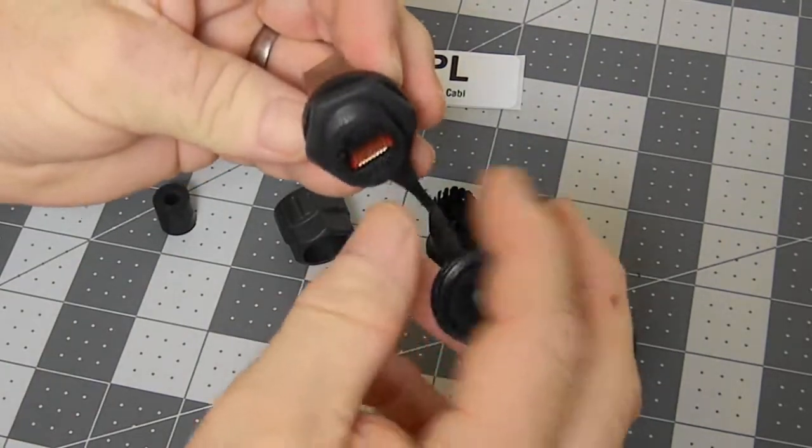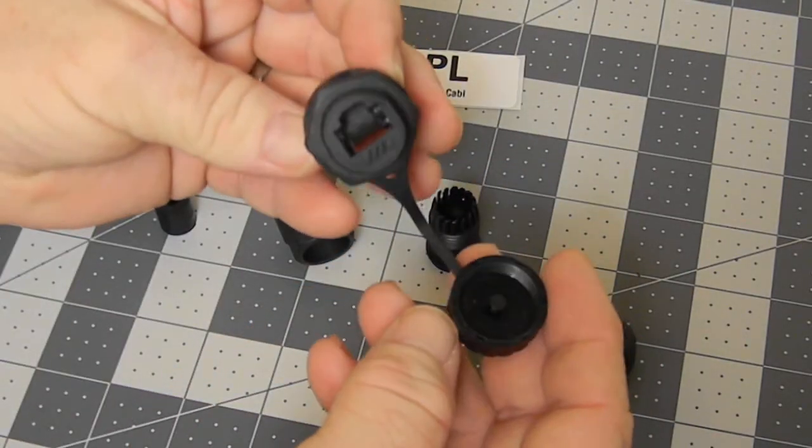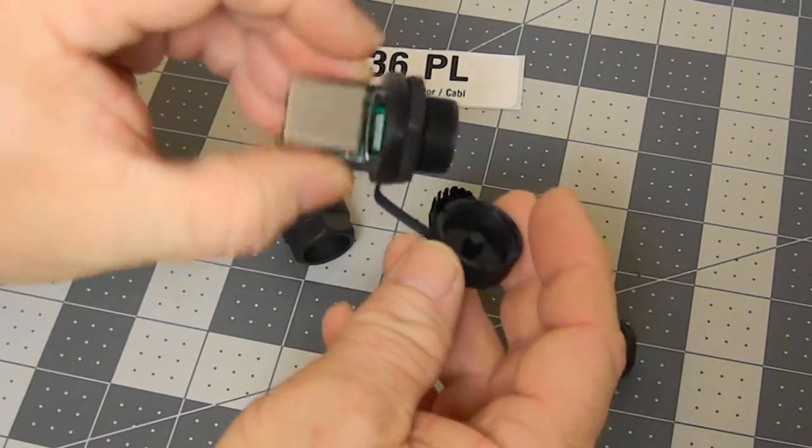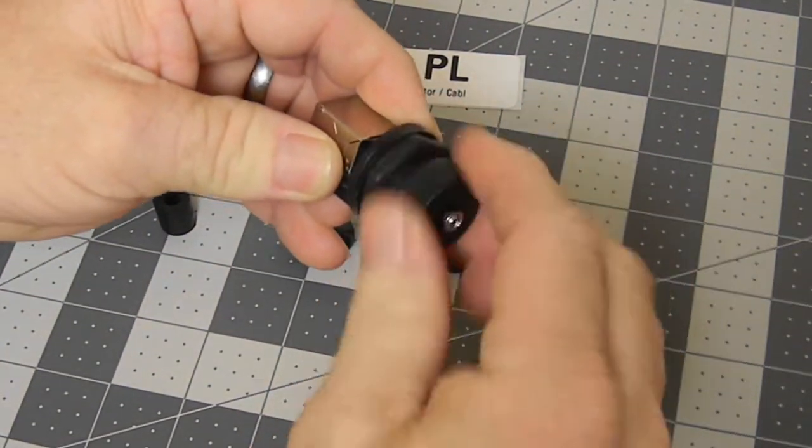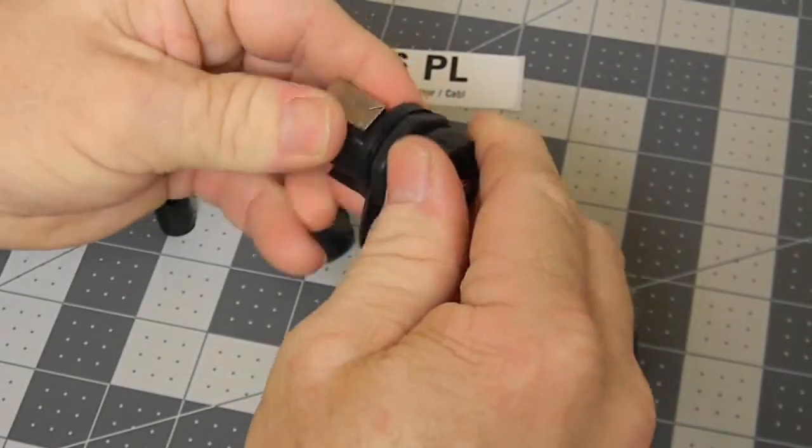Now when it's open it is not IP67. Water can get in and get into the cabinet. So when not in use you must use the dust cap and tighten it down.